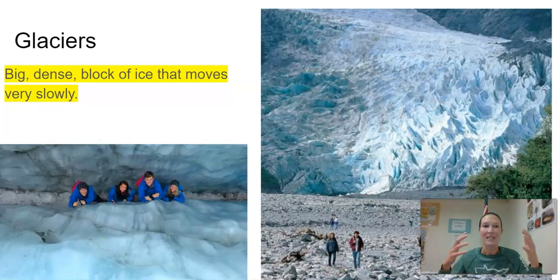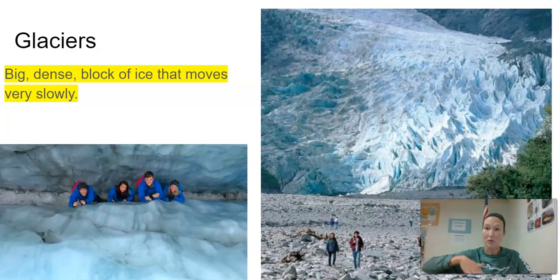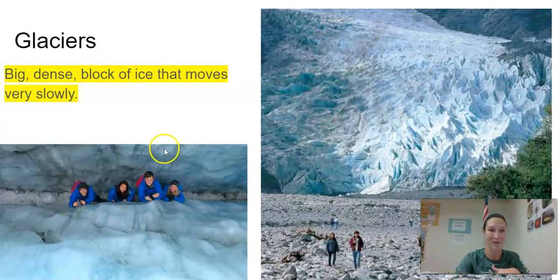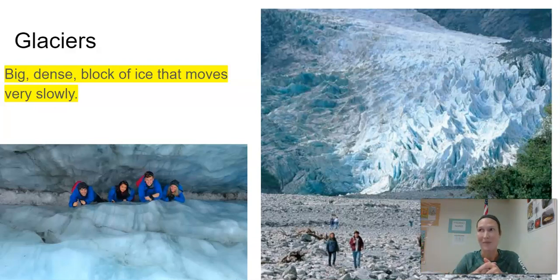Today: glaciers. These are big dense blocks of ice that move really, really slowly. I love this picture on the right because you can see how small these people are compared to how giant the glacier is. Glaciers actually used to cover most of Minnesota — think a mile-high sheet of ice. There are still some glaciers you can explore, but there aren't a ton left, and what's left is getting smaller. That's one of the things highlighted in the attachment videos — the recession of glaciers because our climate is getting warmer.